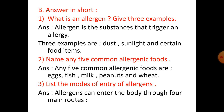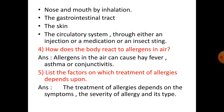Number 3: List the modes of entry of allergens. Allergens can enter the body through 4 main routes: nose and mouth by inhalation, the gastrointestinal tract, the skin, and the circulatory system through either an injection, a medication, or an insect sting.